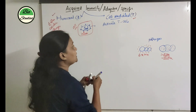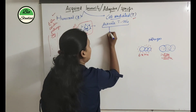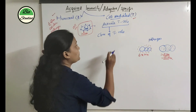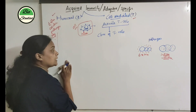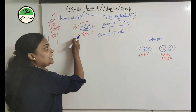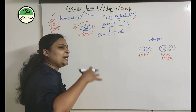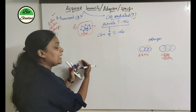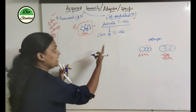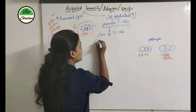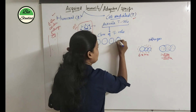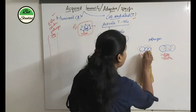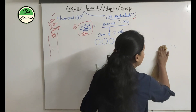T-cells activate and again start dividing by mitosis, forming a clone of T-cells. Same as with B-cells — B-cells activate and multiply into a group of cells forming plasma cells and memory cells. Now with T-cells, we have different types of T-cells.